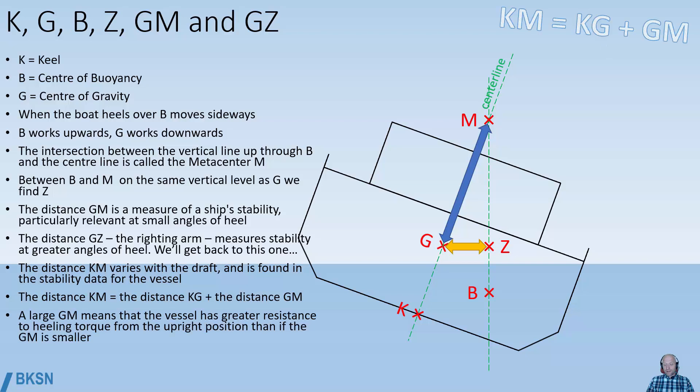If you have a large GM, this means that the vessel has greater resistance to heeling torque from an upright position than if GM is smaller. So large GM, large resistance to heeling torques.